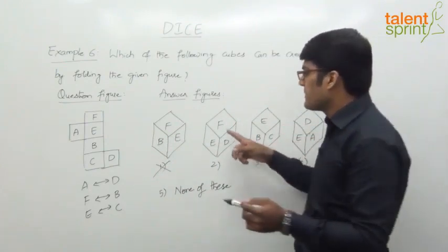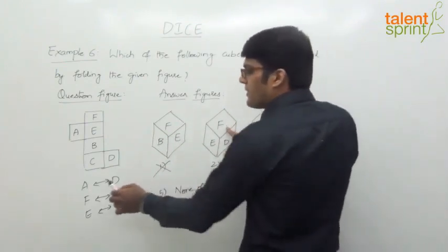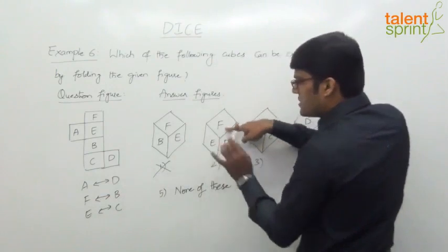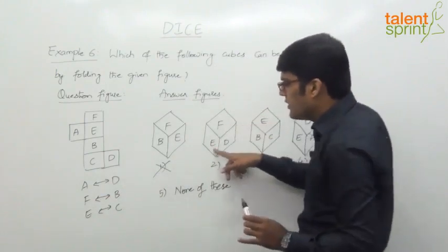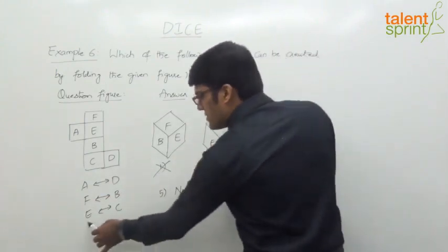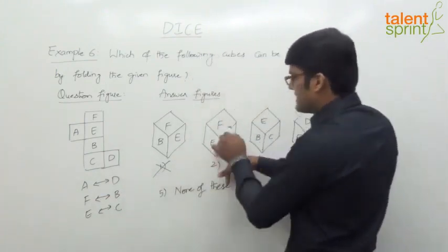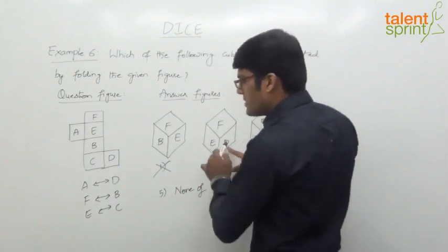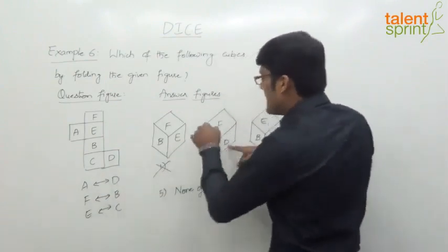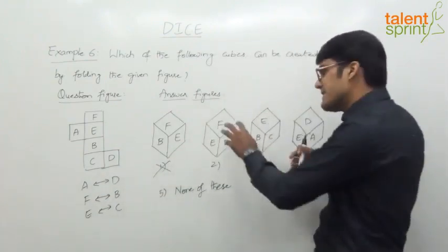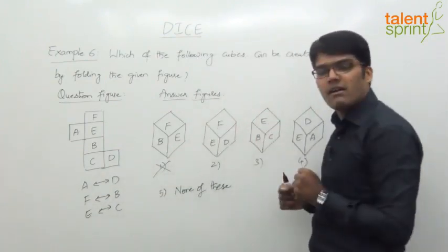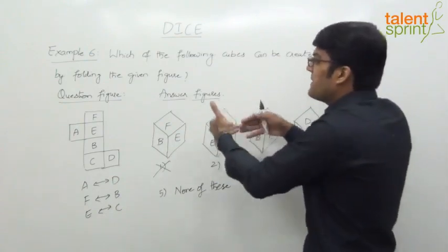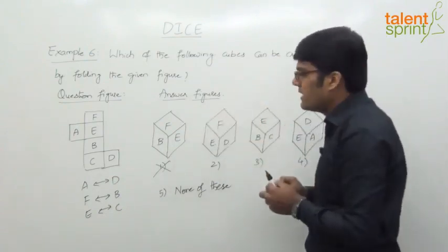For the second figure: opposite faces should not be given together. Look at F — what is opposite to F? B. B is not given. Look at E — what is opposite to E? C. C is not given. Look at D — what is opposite to D? A. A is not given. Which means they are all adjacent — a possible answer, because their opposite faces are not shown.